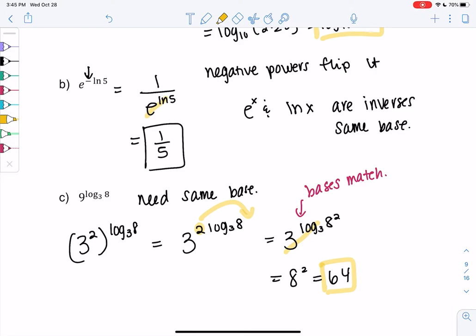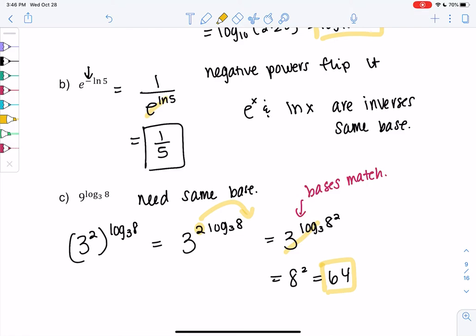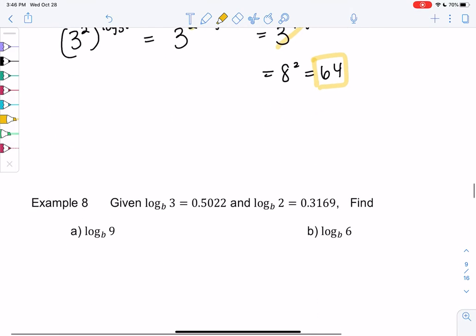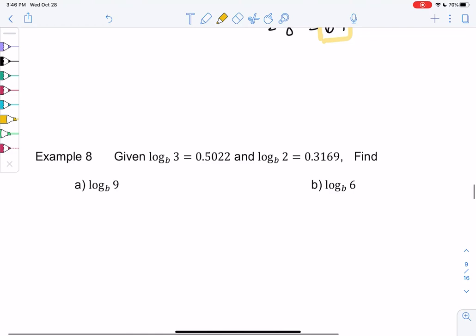So a little weird. It takes some practice to get used to this. It might be brand new for some of us. Let's try one more example. So let's say we have log base b of 3. We don't know what b is, but we know log base b of 3 is 0.5022.